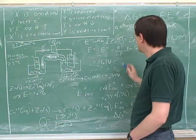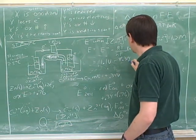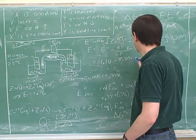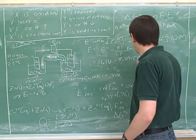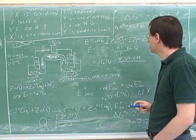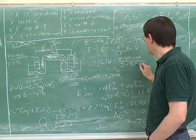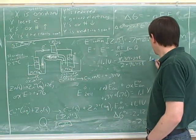And how about for R? 8.314. And for T? 298. All right, and the denominator here we can put in? 2. Mm-hmm. And that's 9.